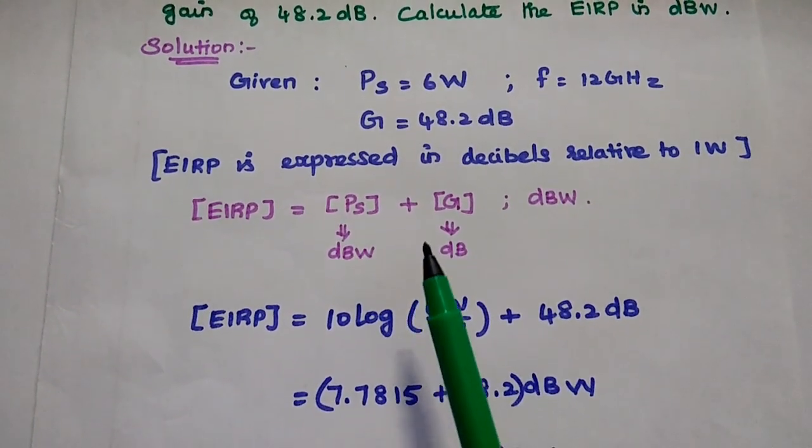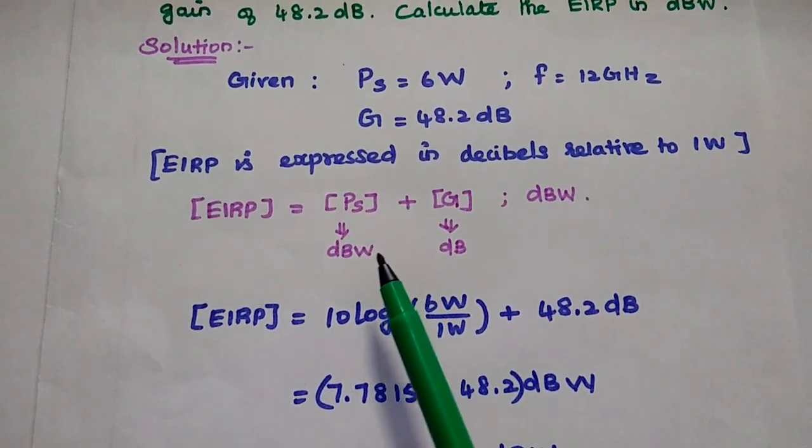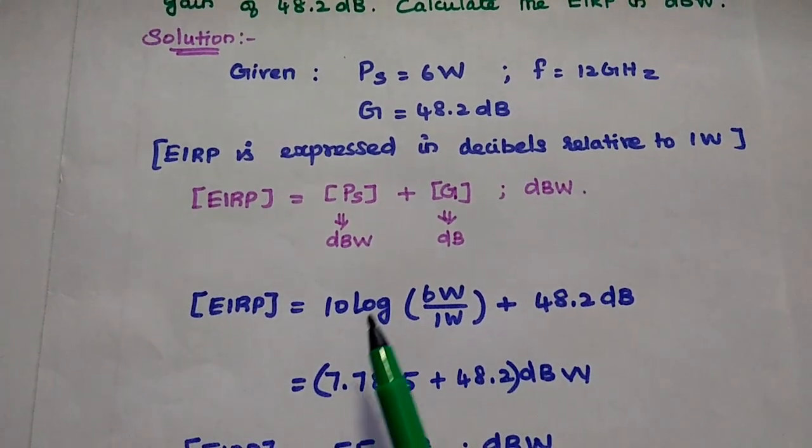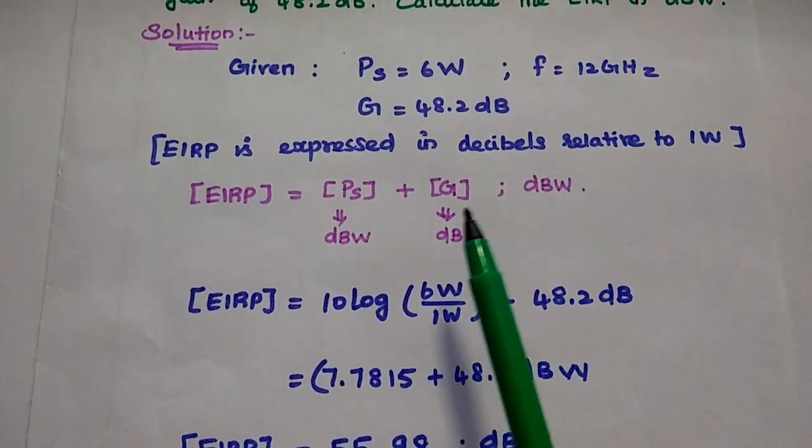In the problem, they have given us the power value in watts. We have to convert that watt into dBW. For that, we can multiply this value 10 log of this 6 Watt.